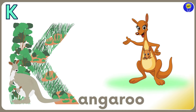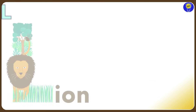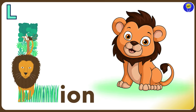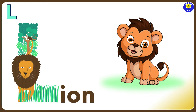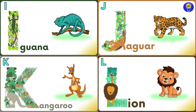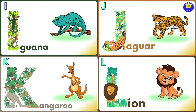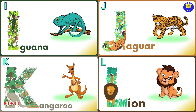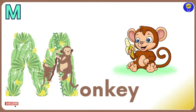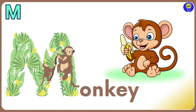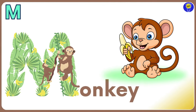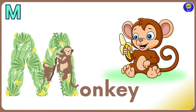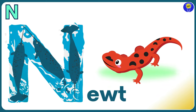K is for Kangaroo. K, K, Kangaroo. L is for Lion. L, L, Lion. M is for Monkey. M, M, Monkey.